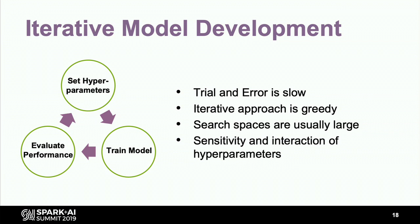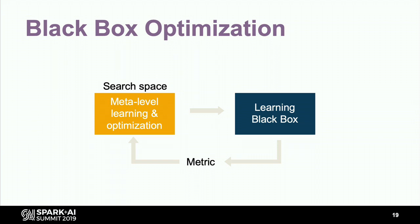In reality the approach is iterative: set some hyperparameters, train the model, evaluate performance, and repeat. This is very slow and greedy — it leads to local optima in your hyperparameter search. Search spaces get large, especially with deep learning. On a more theoretical level, what we're actually solving is a black-box optimization problem. We have a search space — hyperparameters with feasible intervals — and a meta-level optimization algorithm that generates samples. We train the model, which is a complete black box with no gradient information, and it returns a single metric: the final performance. Once we have that metric, we update our knowledge and generate new samples.